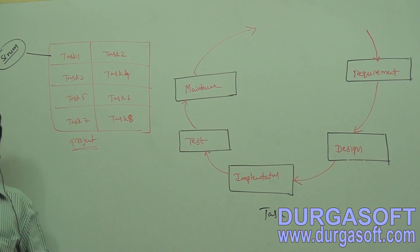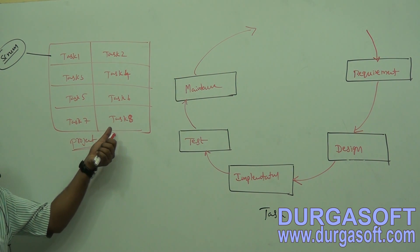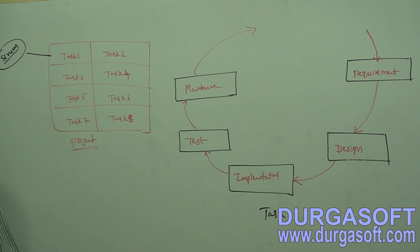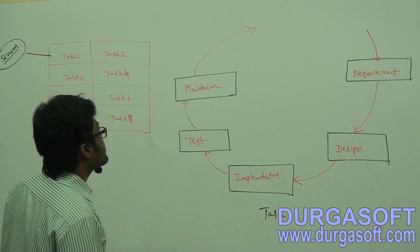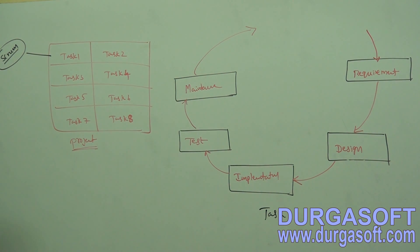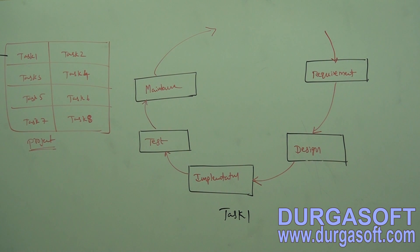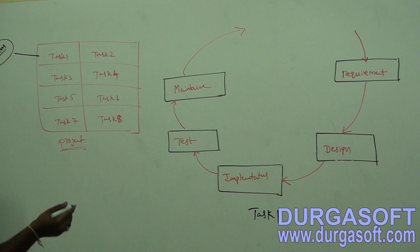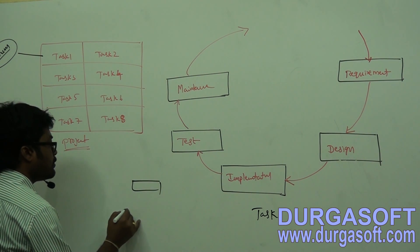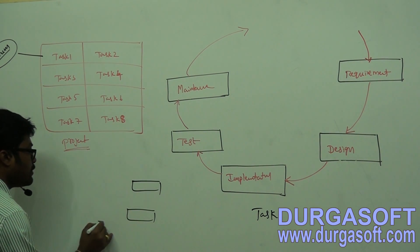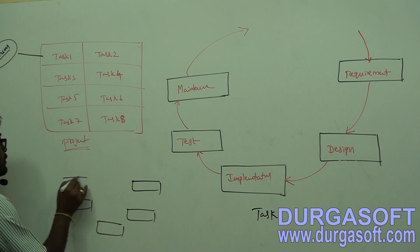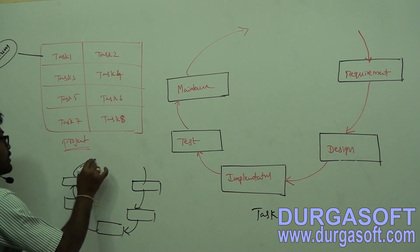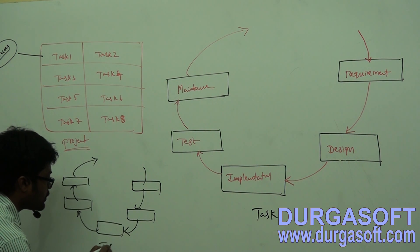Multiple iterations are required. How many iterations? We have eight tasks, so to complete eight tasks, we require eight iterations — eight task iterations. For each task, you need to provide one iteration. Task one iteration, then task two iteration, and so on.